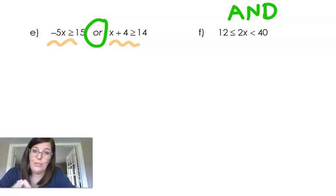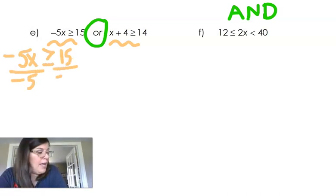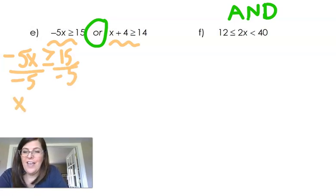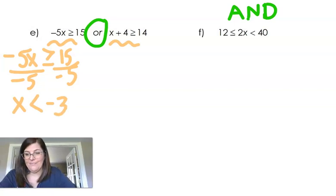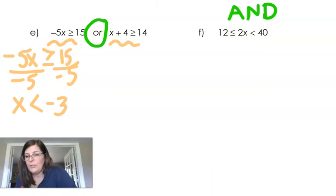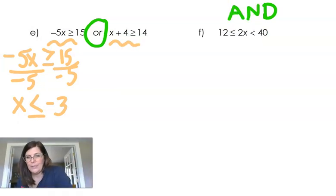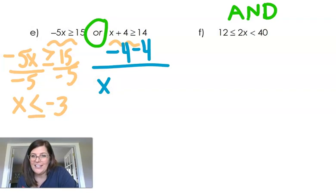Okay, equation number 2. So I've got negative 5x is greater than or equal to 15. I'm going to divide both sides by negative 5. And I have x is less than negative 3. Now look, I almost forgot the less than or equal to. When I switched this, it's greater than or equal to, so it becomes less than or equal to. Now I have to do baby problem number 2. So all I'm doing is subtracting 4 from both sides. And I have x is greater than or equal to 10.